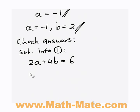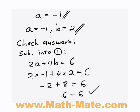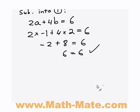So instead of a, I'll write negative 1, and instead of b, I'll write 2. So basically we're just checking whether this equation is going to actually become true. So negative 2 plus 8 equals 6. Negative 2 plus 8 is 6, so it's 6 equals 6. So the equation is correct. So our answers check out with equation 1.